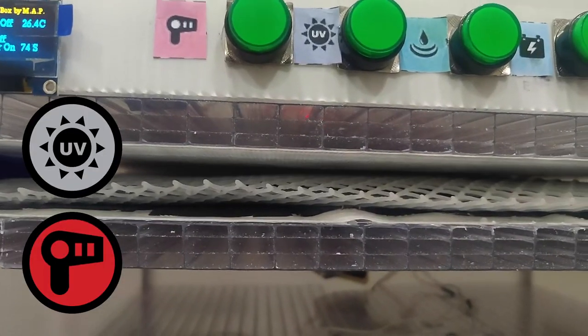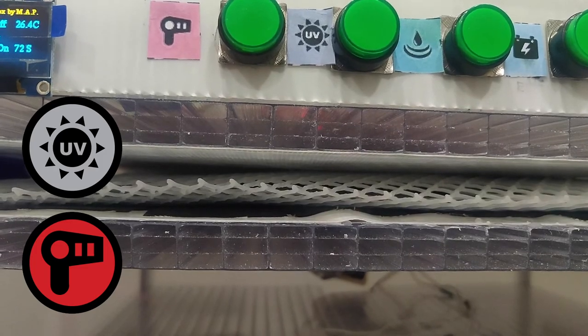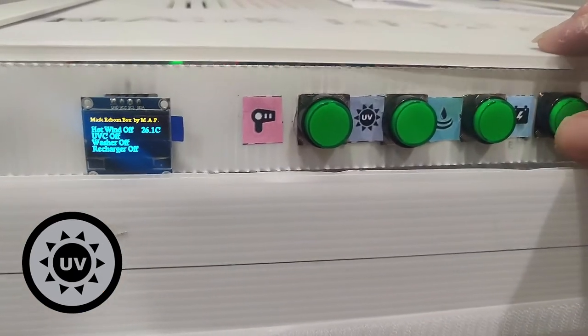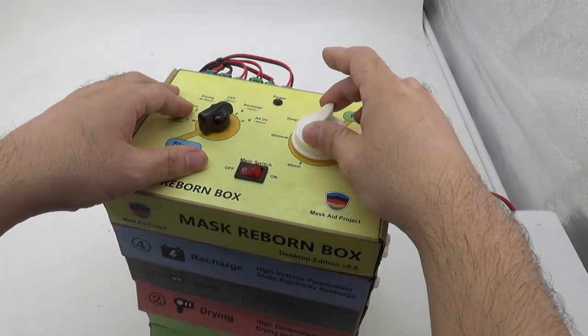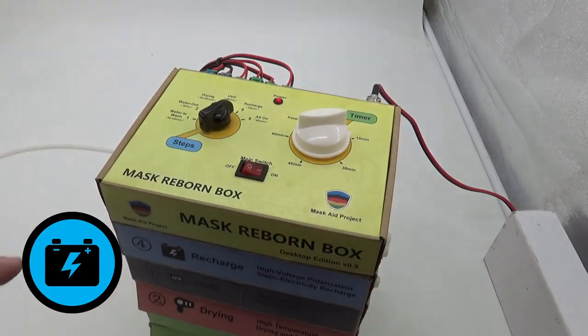This is done either at the same time or as a separate 30-minute process depending on the model. Then, the magic step. We zap it with 5000 volts of electricity to renew the static charge.